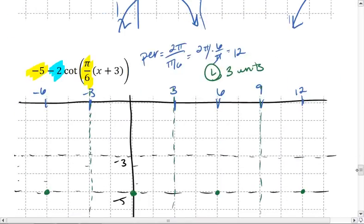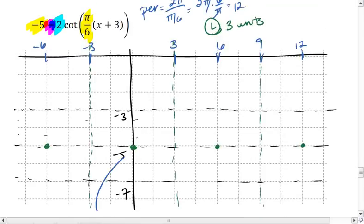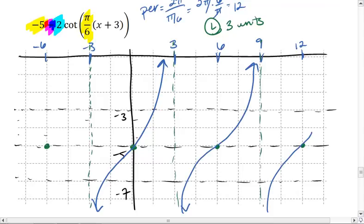But we have this nagging little negative here, which means that we reflect it. So instead of starting high, we're going to start low and come up. Start low and come up. Start low and come up.